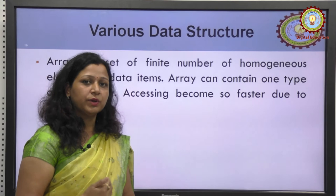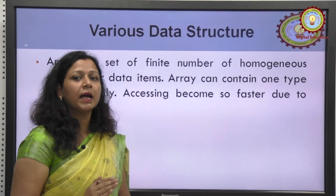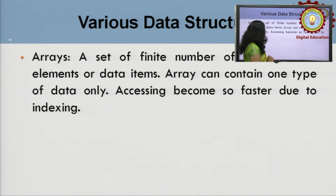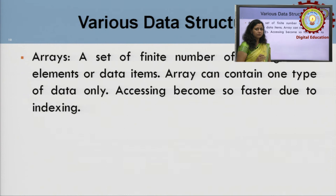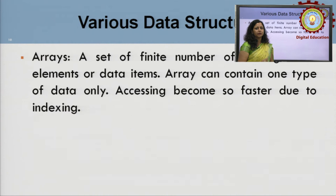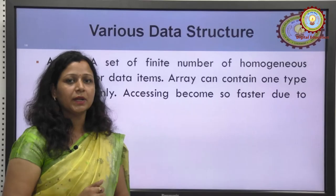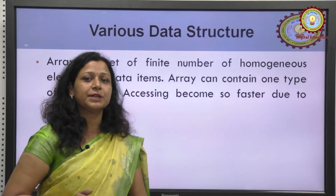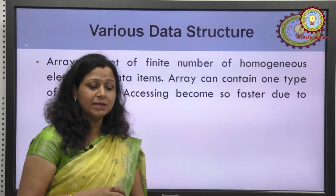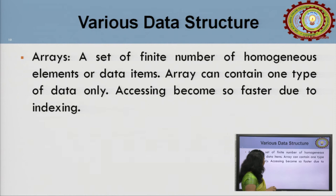So we would separate collections of the same type of data items: numbers in one collection, Hindi characters in another, and English alphabets ABCD in a third. Same type of data items collection — this is called an array. An array can contain only one type of data. If you are arranging integer blocks, you cannot put alphabet blocks in it. You can only keep data items of the same data type in an array.